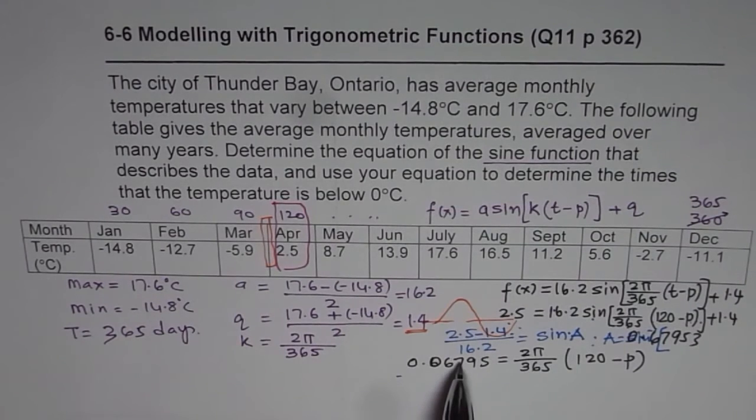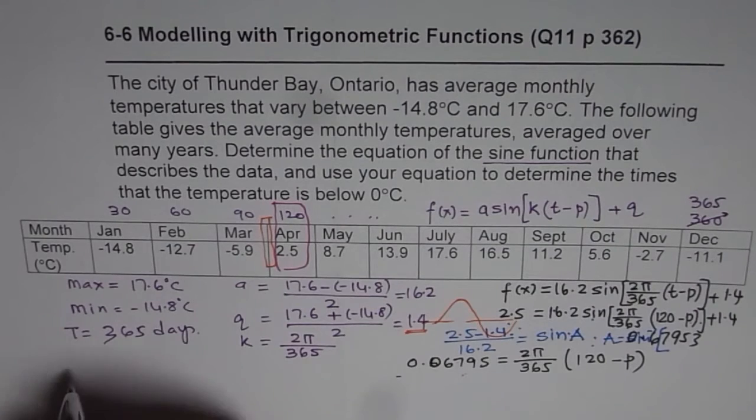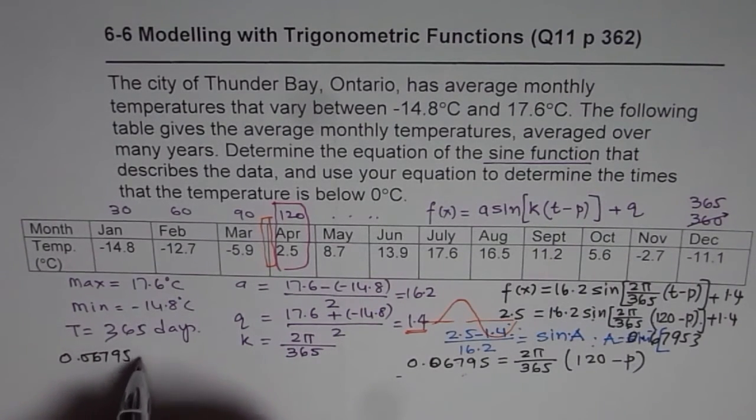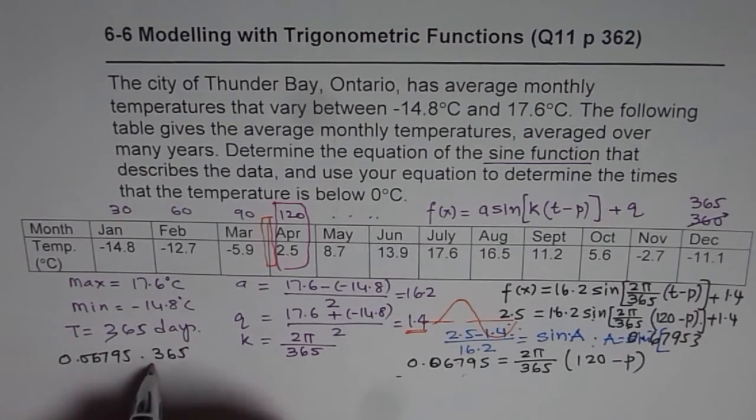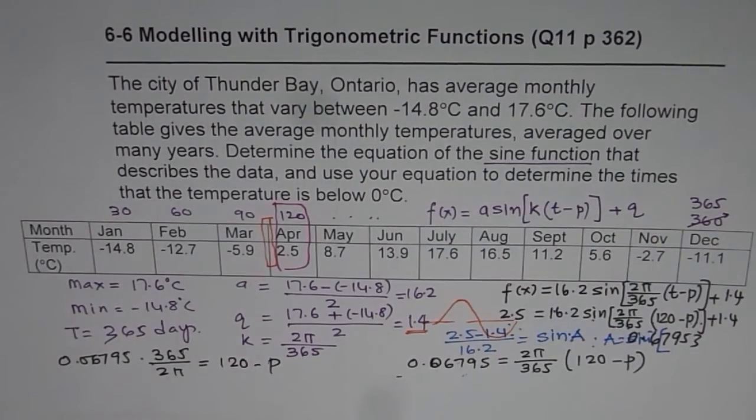So what I'm trying to say here is this. So what we will do is, 0.06795, we'll multiply by 365, divide by 2π. Then what we get is 120 minus p, is that okay? So let's do this part. So we have this, we'll multiply by 365, divide by 2, divide by π, and then we get 3.947. So we get 120 minus p as 3.947.